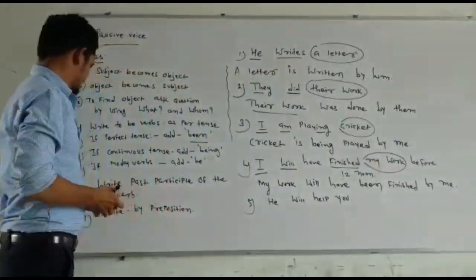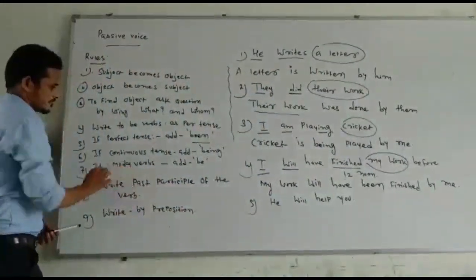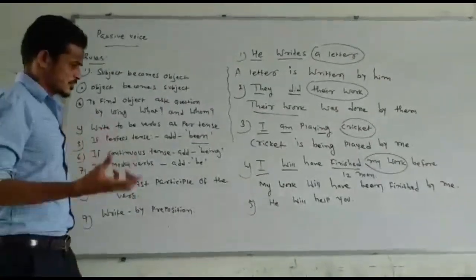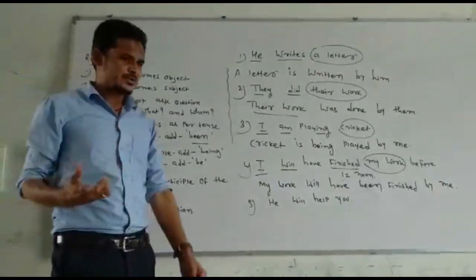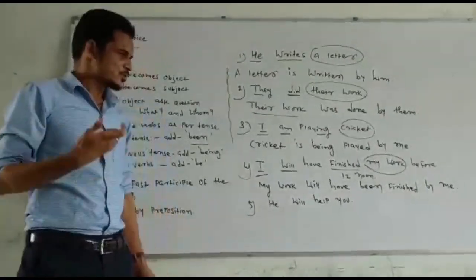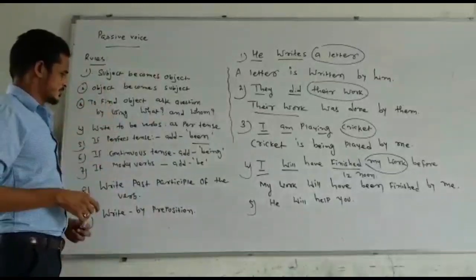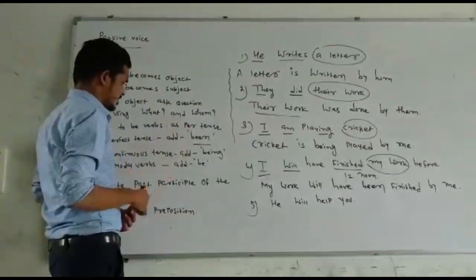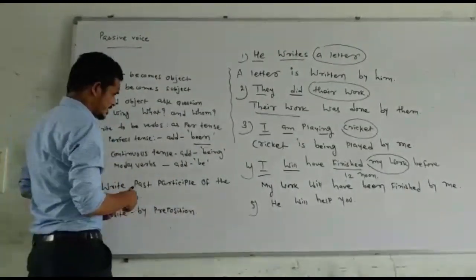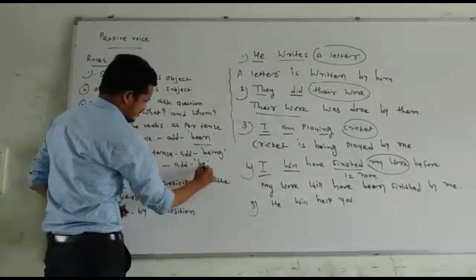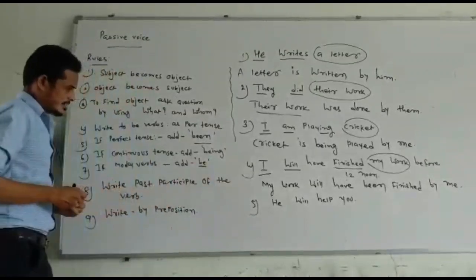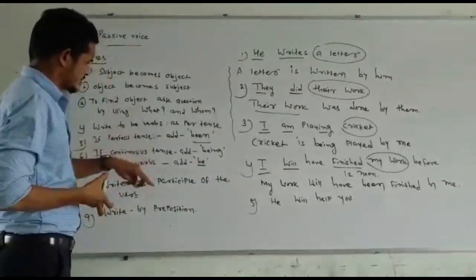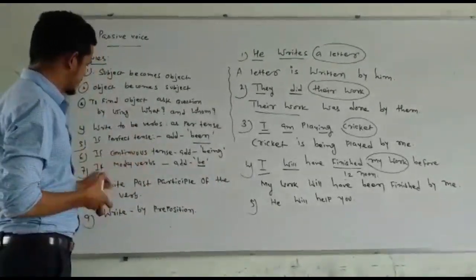What about modal verbs? If any modal verb is given — such as can, could, would, should, have to, has to, to be to — we have to add only 'be' and the third form (past participle) of the verb. Example: 'He will help you.' He will help whom? 'You' is the object. We write: 'You will be helped by him.' The subjective pronoun 'he' changes into the objective pronoun 'him.'